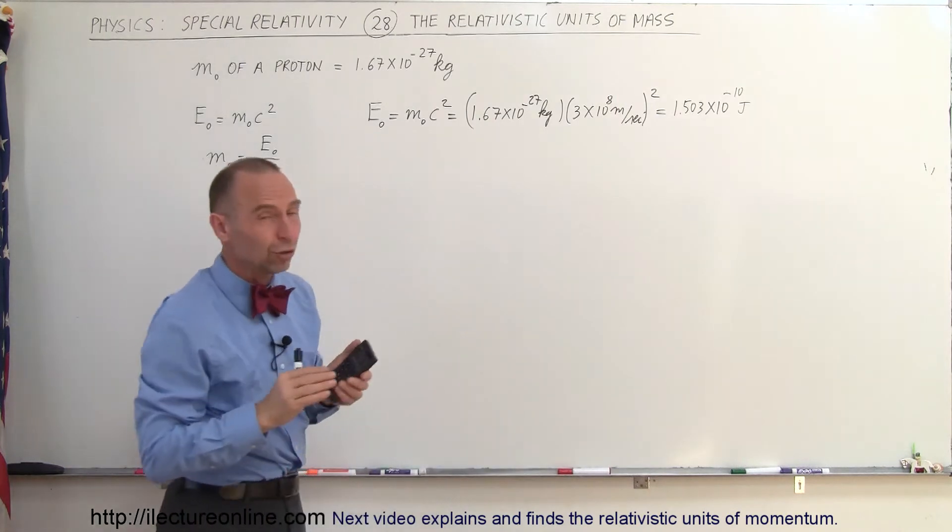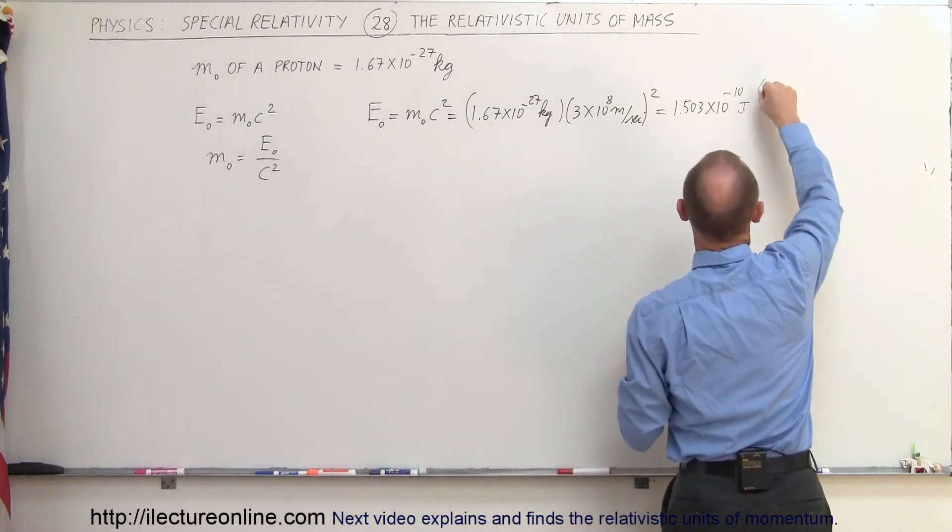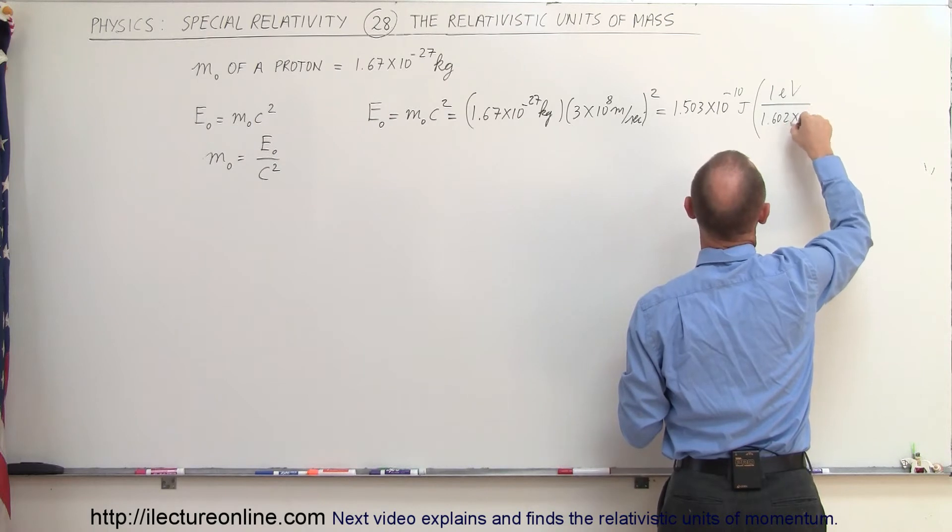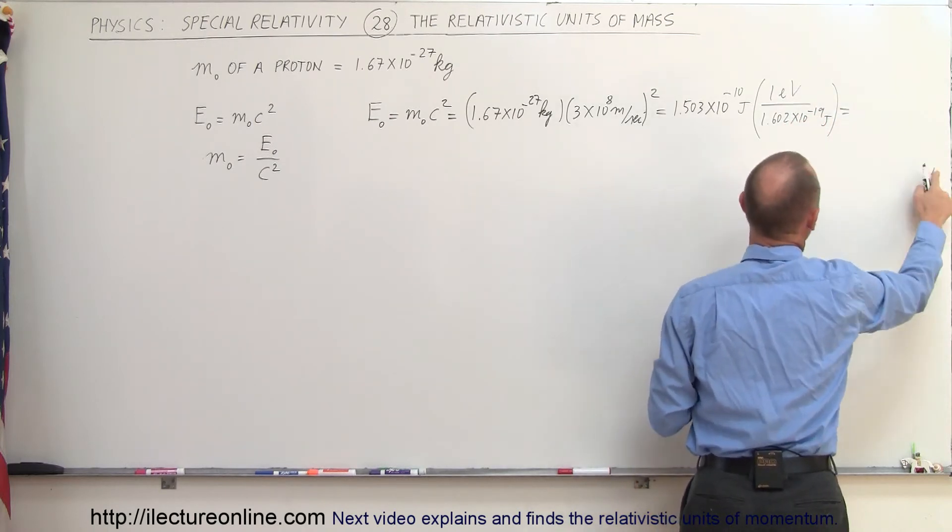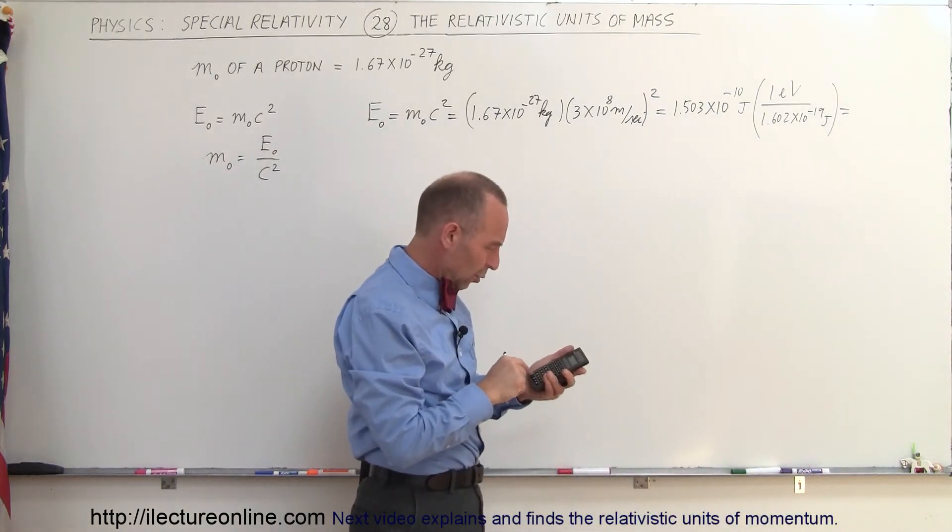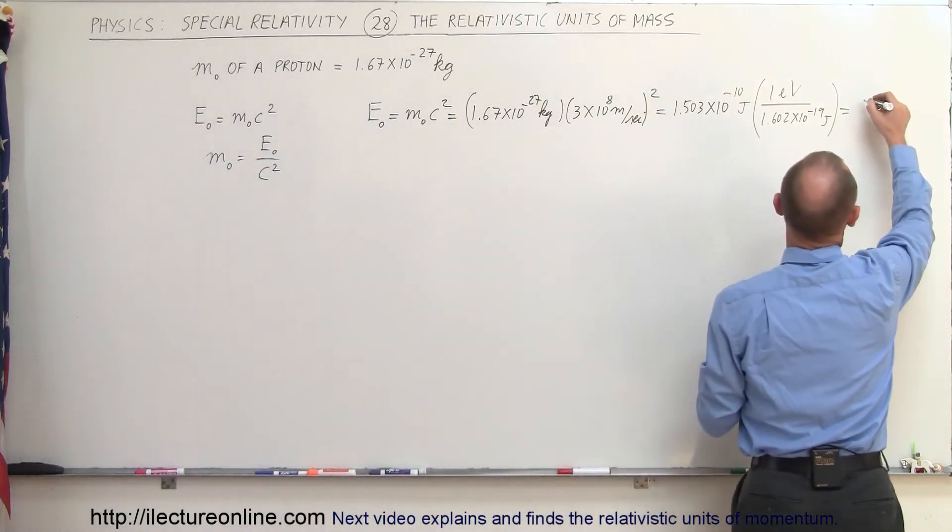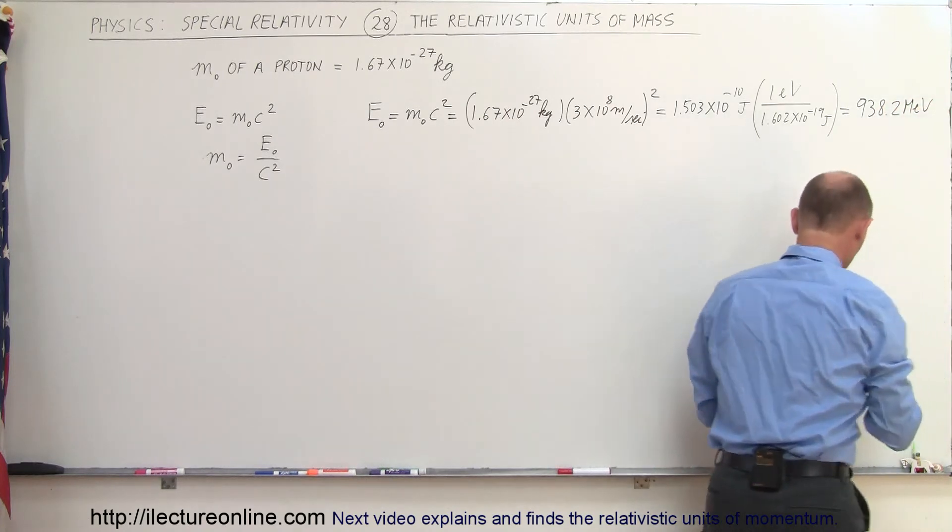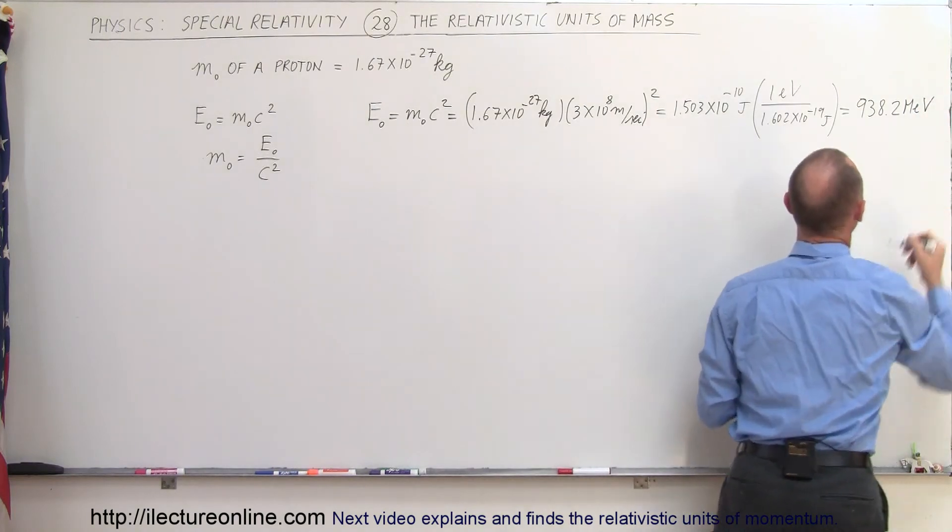And then we want to convert that to the units that we typically use in relativity, which is electron volts. So we're going to multiply this times 1 electron volt divided by 1.602 times 10 to the minus 19 joules. So that's how we convert from joules to electron volts. So divide by 1.602 E to the minus 19 equals, and we get 938.2 MeV for million electron volts.